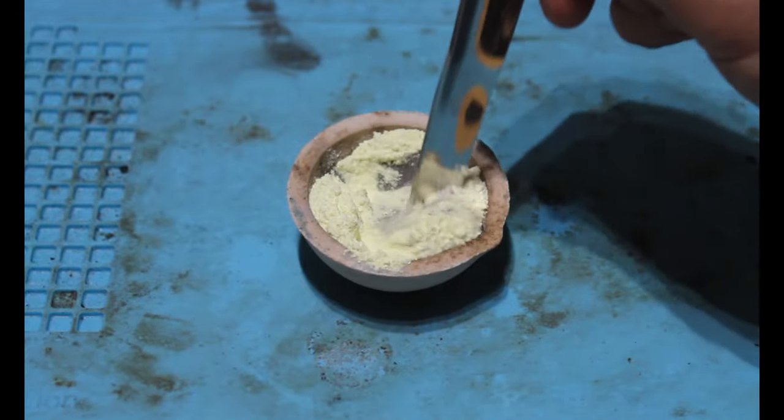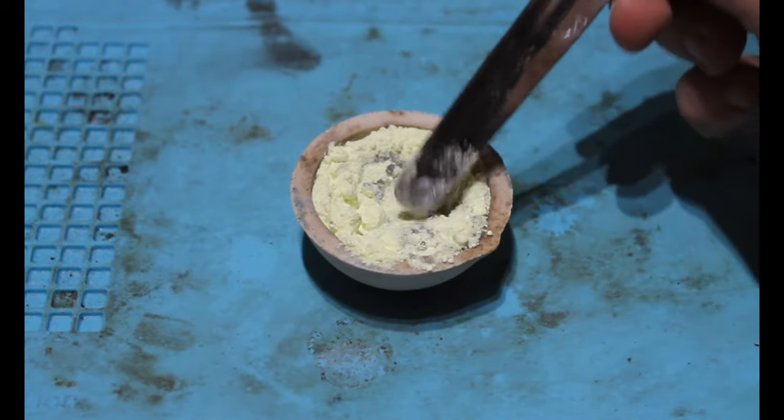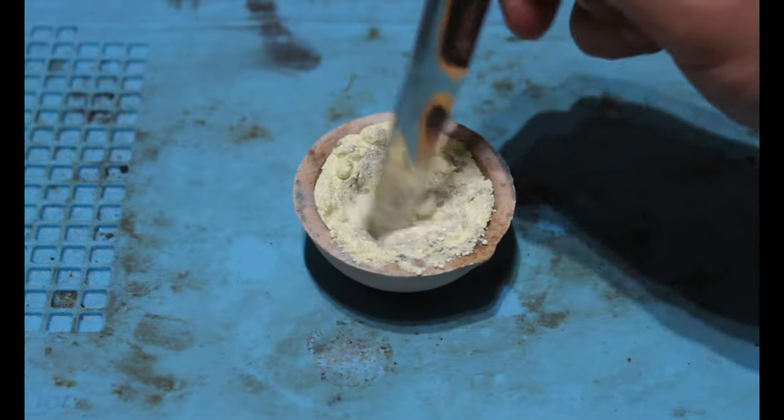Both materials are placed in the crucible and given a stir to ensure good contact between our two elements.